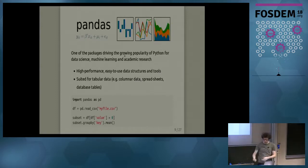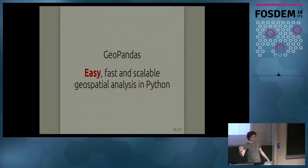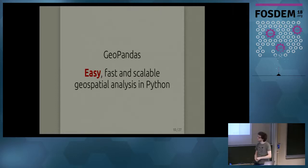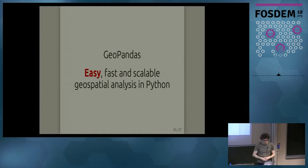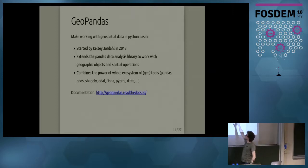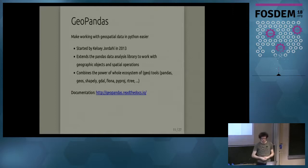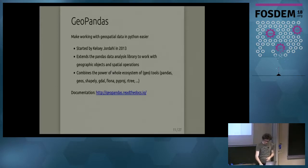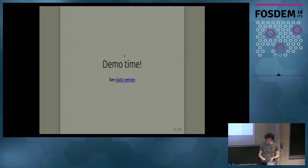GeoPandas tries to combine pandas with the abilities of Shapely to work with geometry objects, making it easier to work with a bunch of geometry objects and their data attributes. It was started by Kelsey Jordahl a few years ago and builds upon not only pandas and Shapely but also many other libraries — Fiona and GDAL for I/O, PyProj for reprojections, R-tree for spatial indexing.